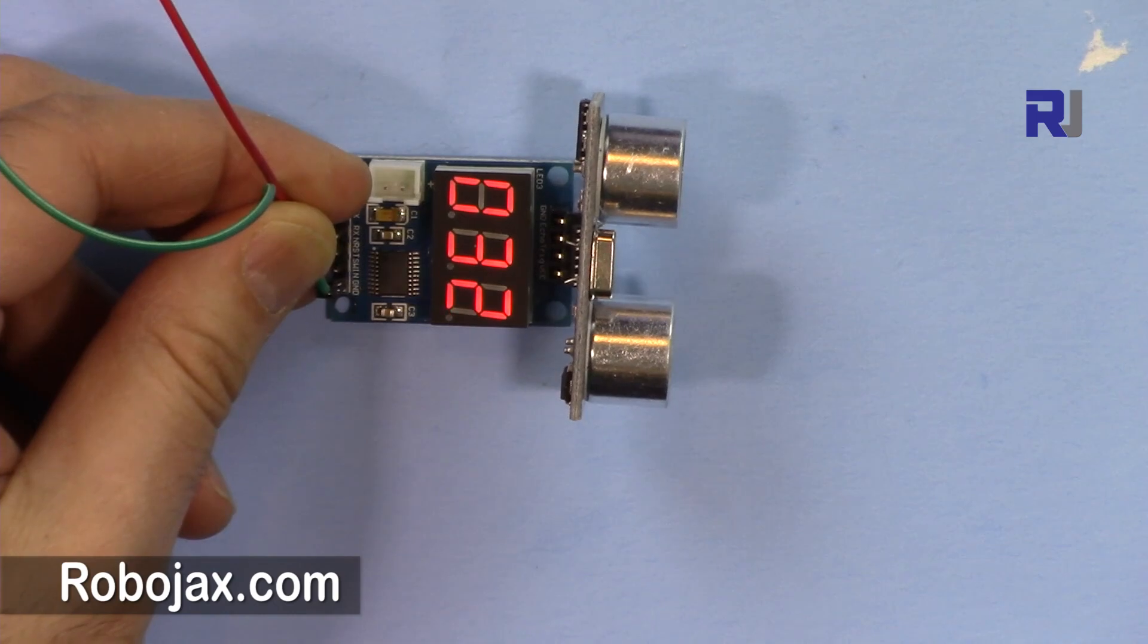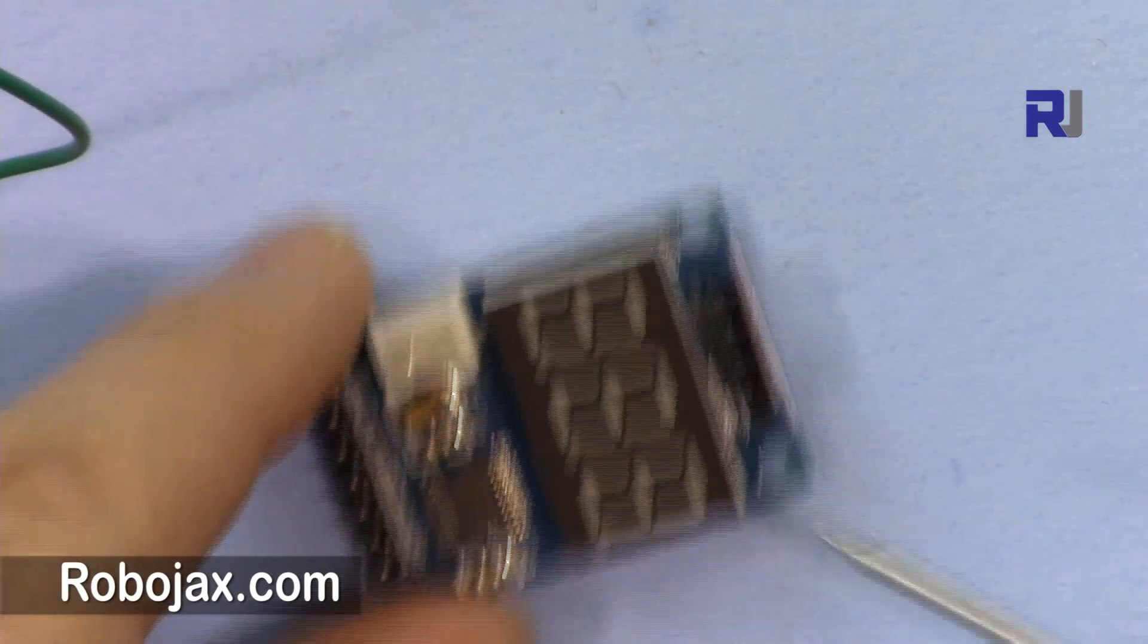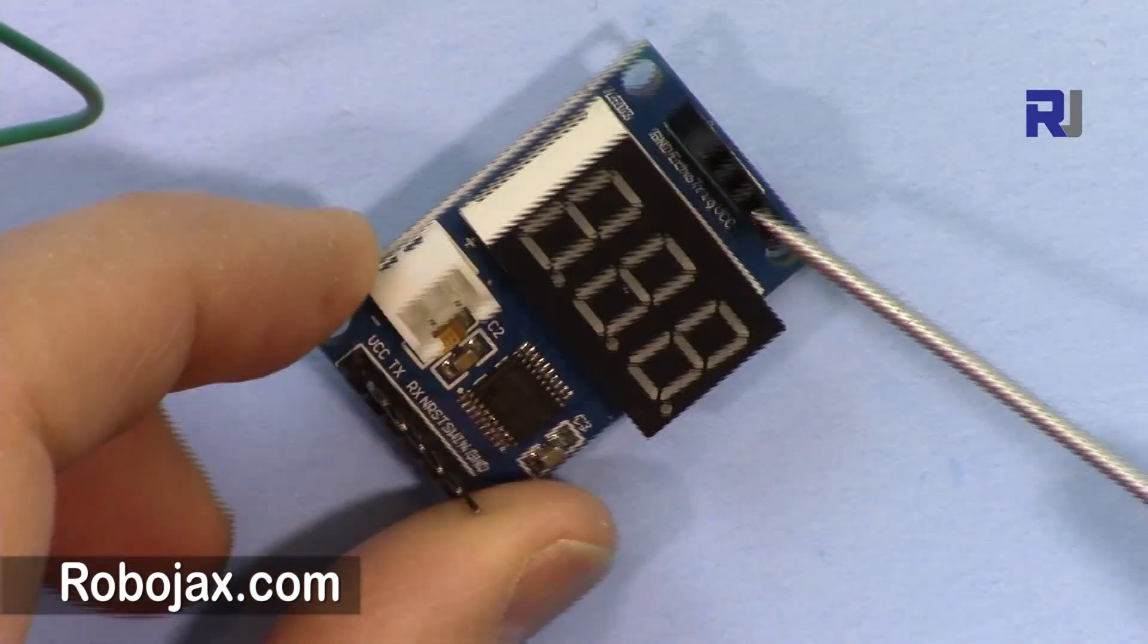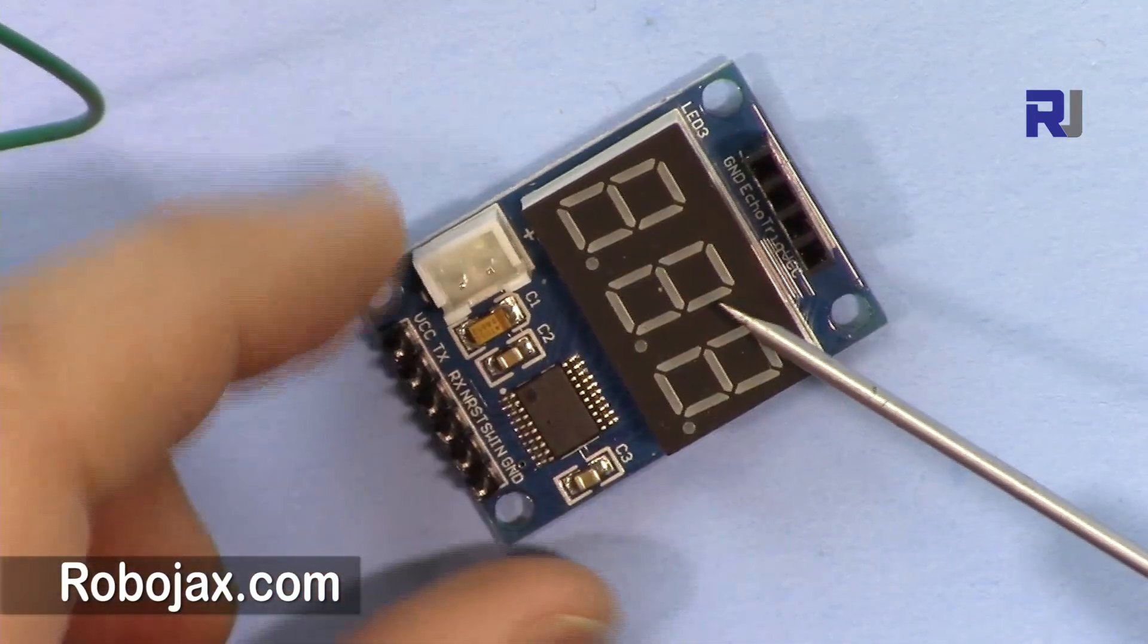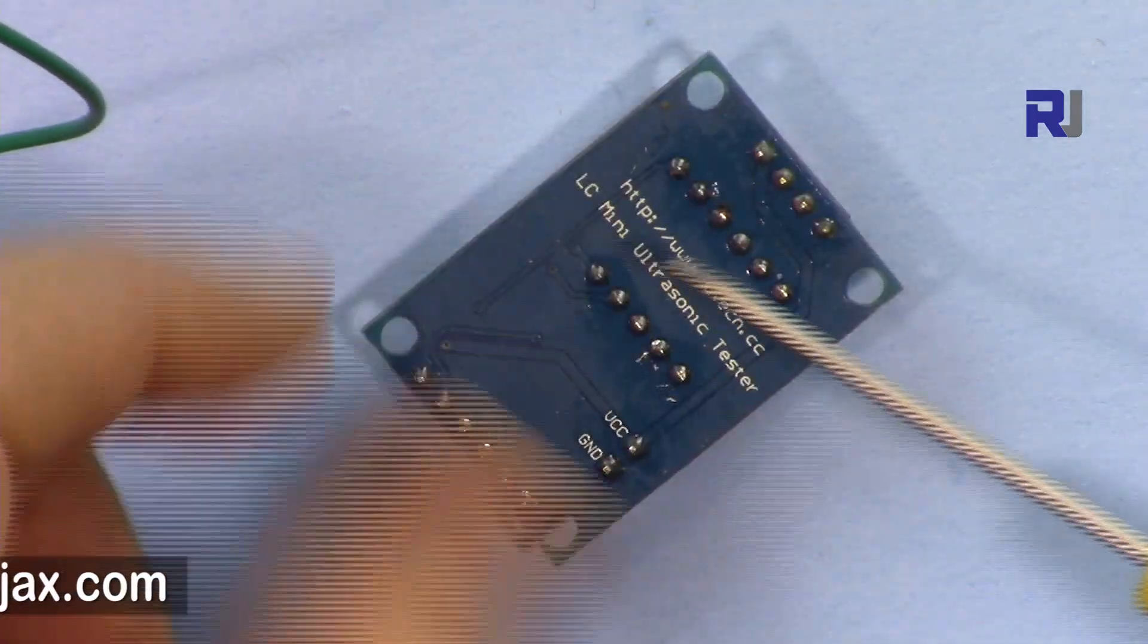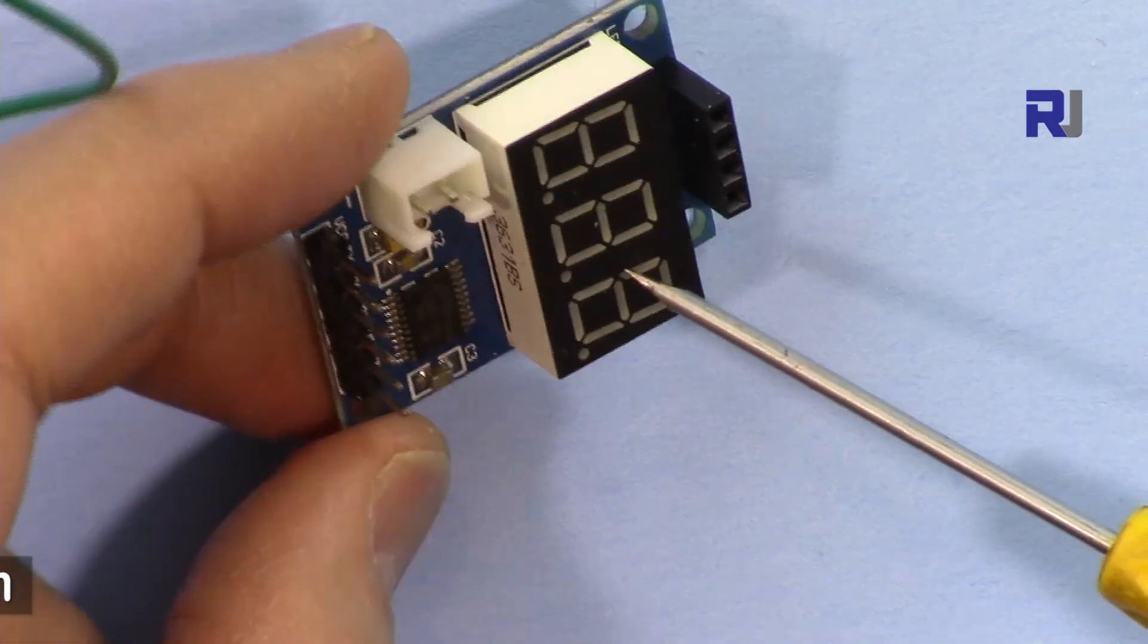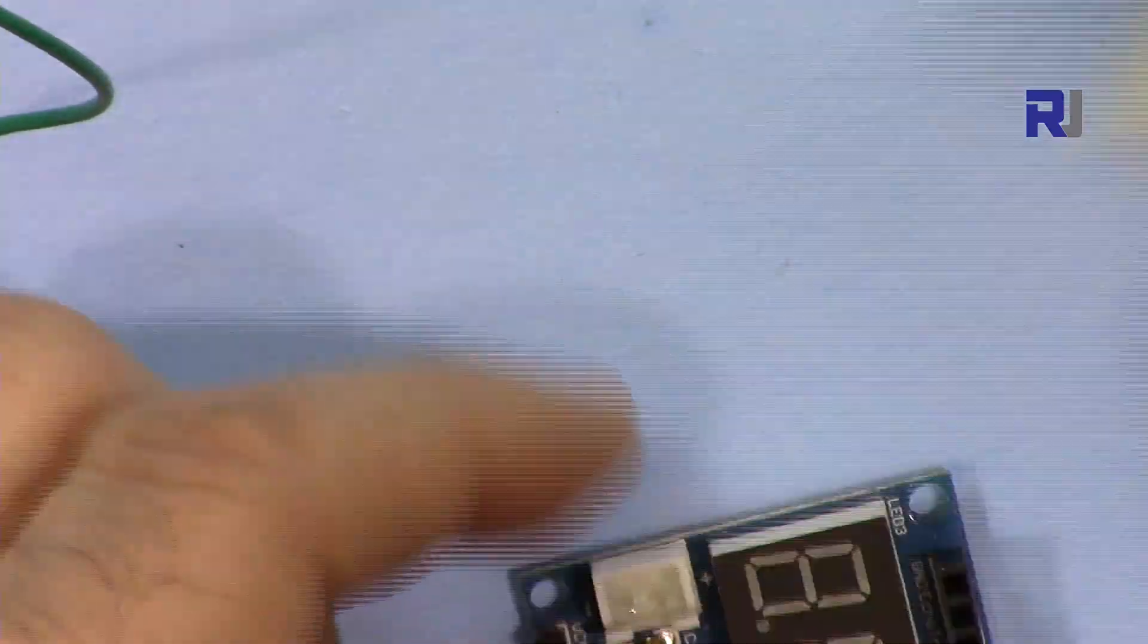This is the module, very tiny as you can see. This is the 8305 by IC Station. They have come up with this solution to make it very easy, because sometimes you